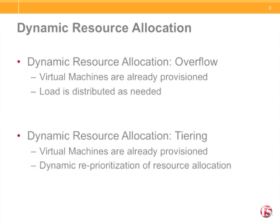There are two types of dynamic resource allocation: overflow and tiering. Common to both of these methodologies, all potential resources are pre-provisioned and ready. However, the methodologies differ in that with overflow, we have standby compute resource ready for on-demand access, whereas with tiering, we dynamically reprioritize an application's access to the compute resource.